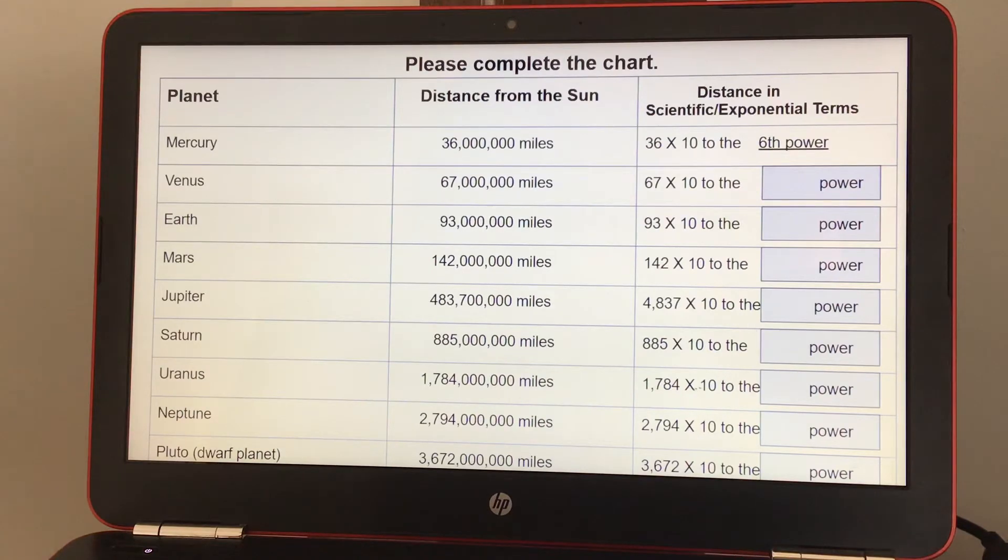Earth is 93 million miles away from the Sun. Mars is 142 million miles away from the Sun. Jupiter is 483,700,000 miles away from the Sun. Saturn is 885 million miles away from the Sun.